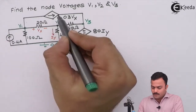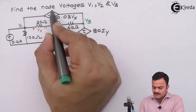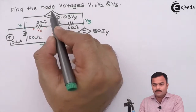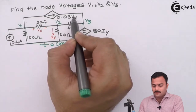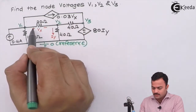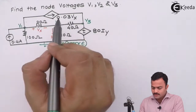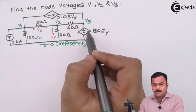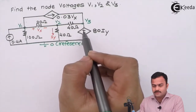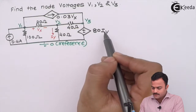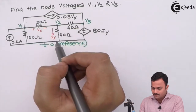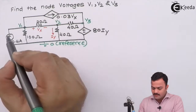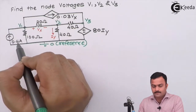Over here we have two dependent sources. As per the symbol, this arrowhead means it's a dependent current source, and it depends upon the voltage Vx across the 20 ohm resistor, so it's a voltage-controlled current source. This one is a dependent voltage source and it depends upon the current Iy flowing through the 40 ohm resistor, so it's a current-controlled voltage source. We also have an independent current source of 0.4 ampere.